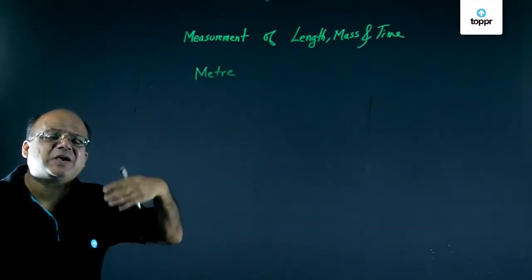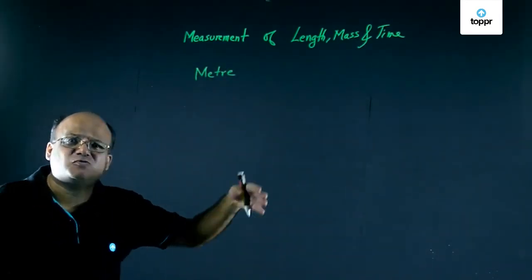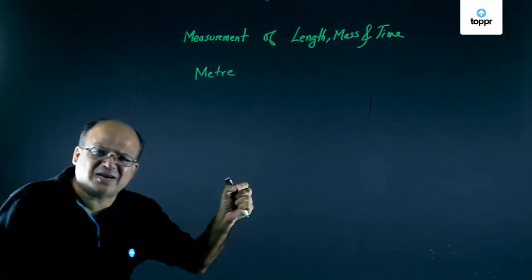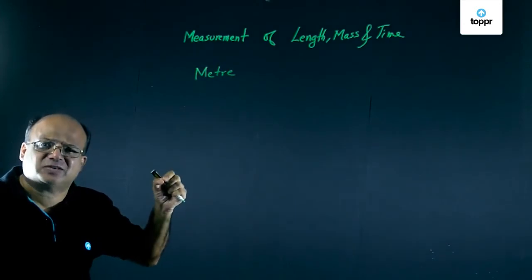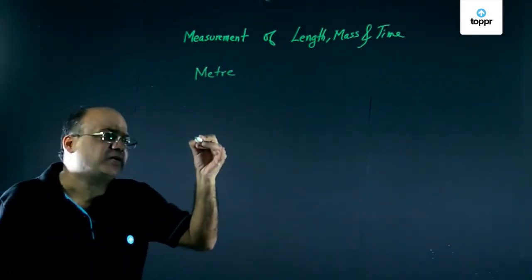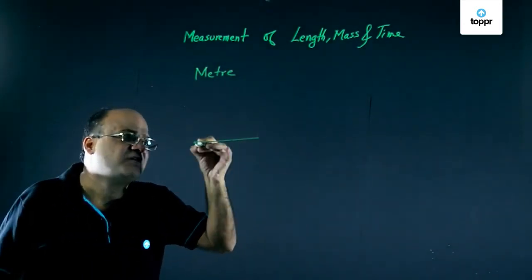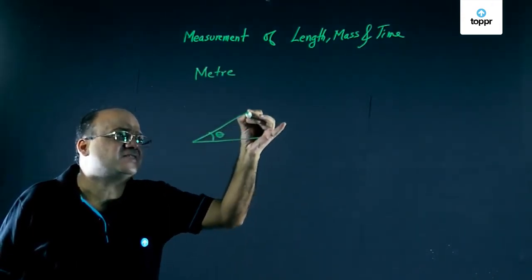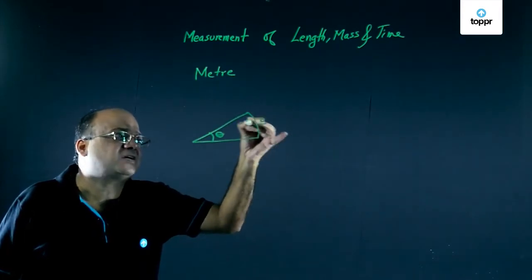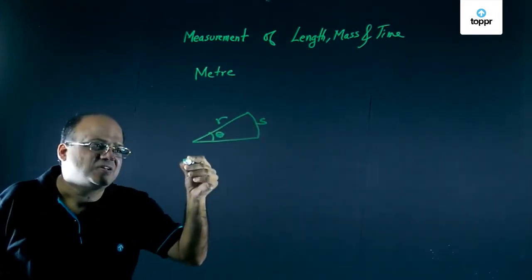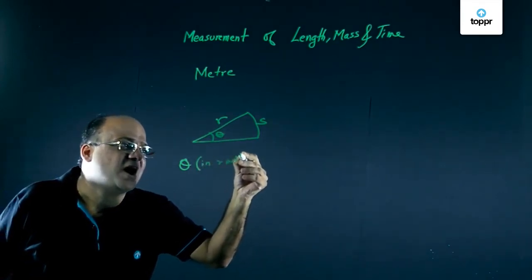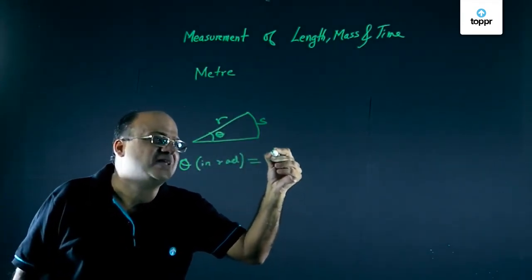Suppose we want to measure big lengths, distance to a planet, to a star. For that, we use the parallax method. If we remember, when we have angle theta, this theta in radians is length of arc by radius. So theta in radians is length of arc S by radius.